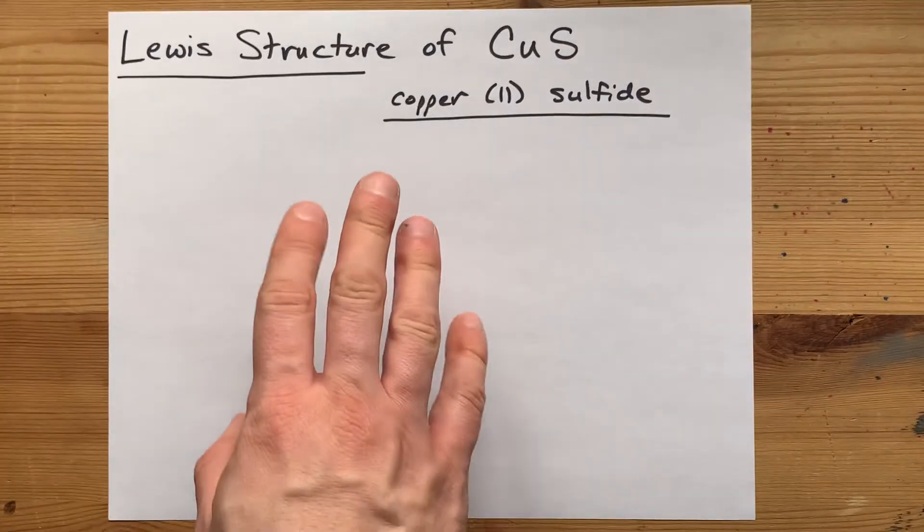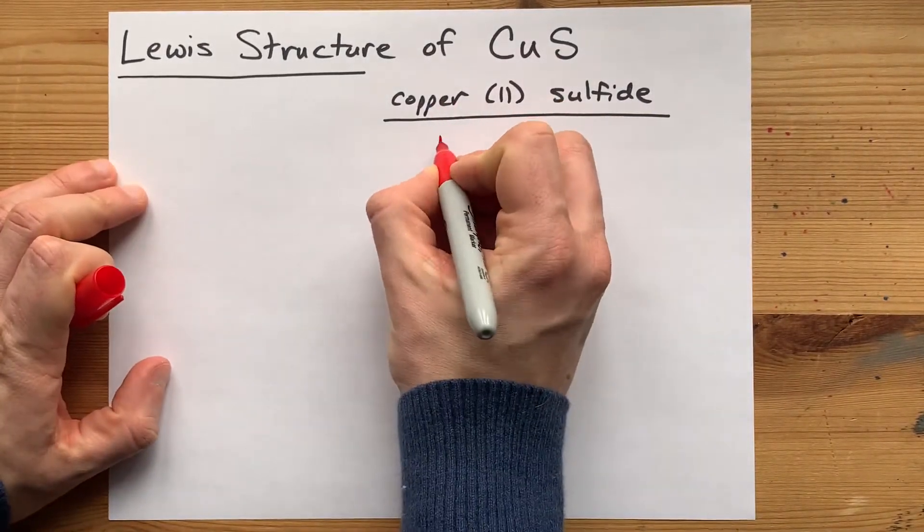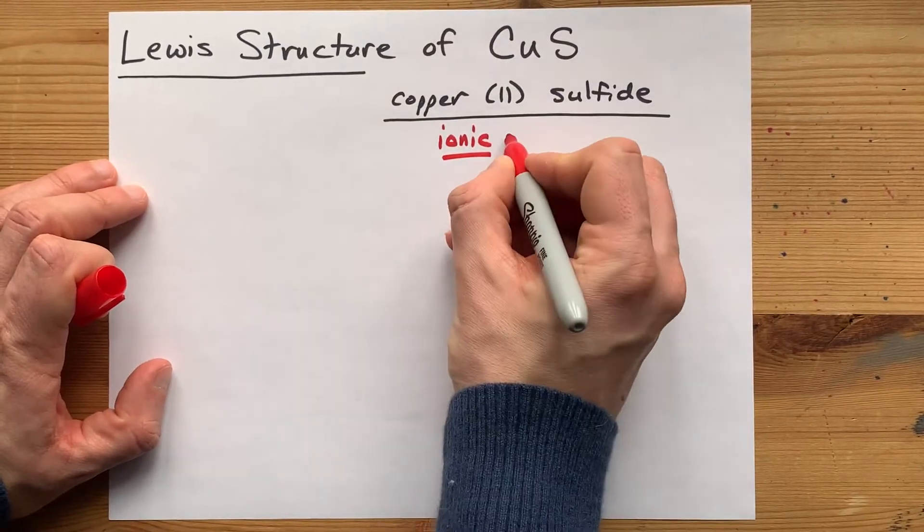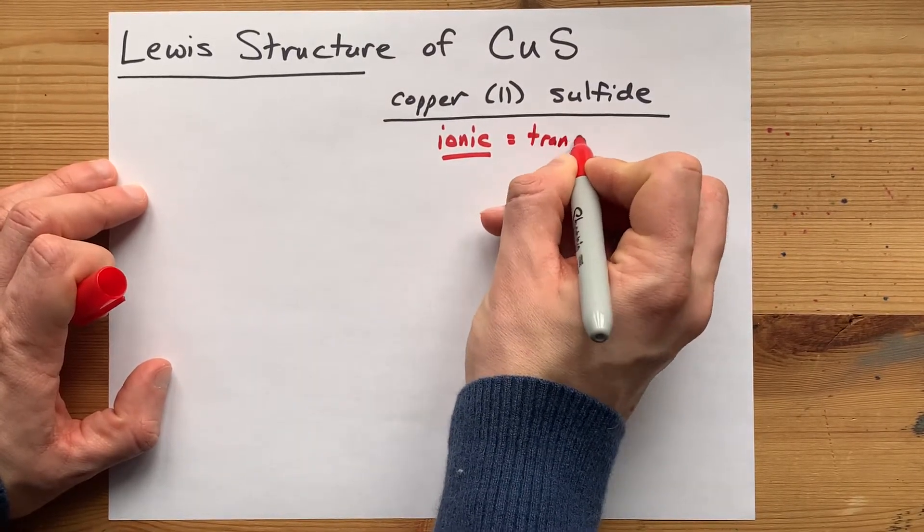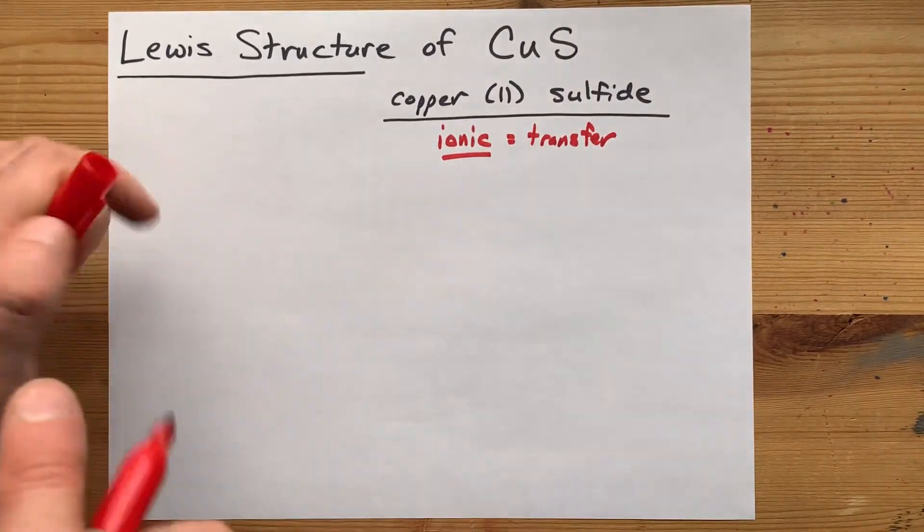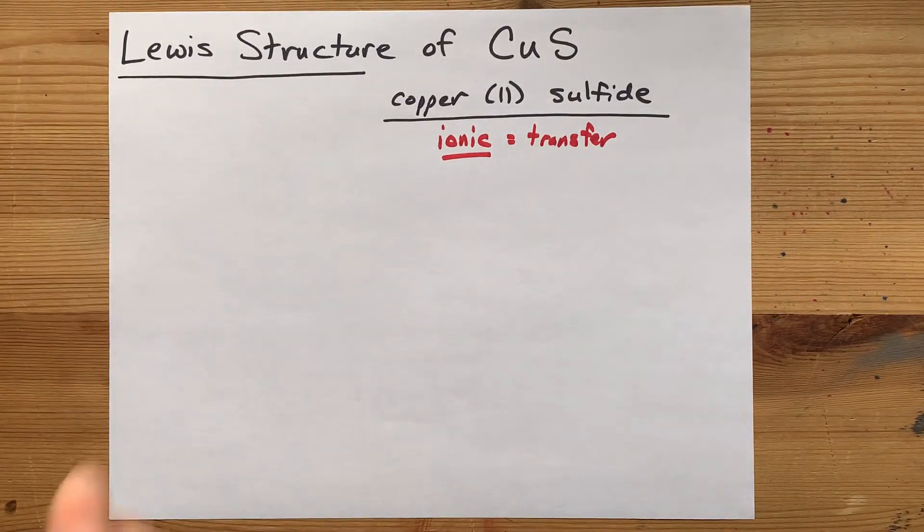The reason that's important is because metals and non-metals, when they bond, always form ionic compounds. And ionic compounds occur by transfer of electrons from metal to non-metal.